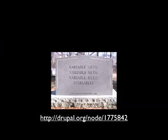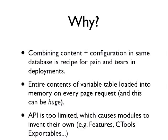The configuration system is intended to kill the variable system in Drupal 7, and we're just about done. The huge problem with the variable table is that you're combining configuration and content in the same database, so it's really difficult to say you want this part of the database but not that part. There's also a problem where the entire contents of the variables table is loaded into memory on every single page load — that's really expensive. And the API is limited, which causes all these other modules in contrib to invent their own ways of doing things — Features, CTools exportables, etc. So the idea was to scrap that and bake a new configuration system into core.